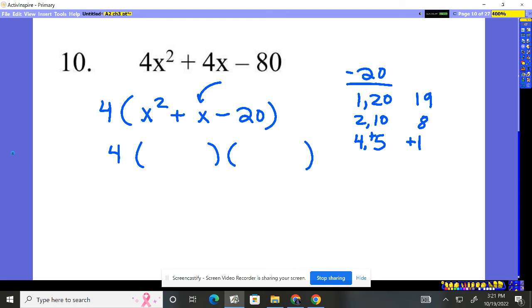That means the plus has to be on the bigger number, the minus there. Because a positive 5 with a negative 4 will give you that plus 1 that you are wanting right here, a plus 1. So this will be x minus 4 and x plus 5.